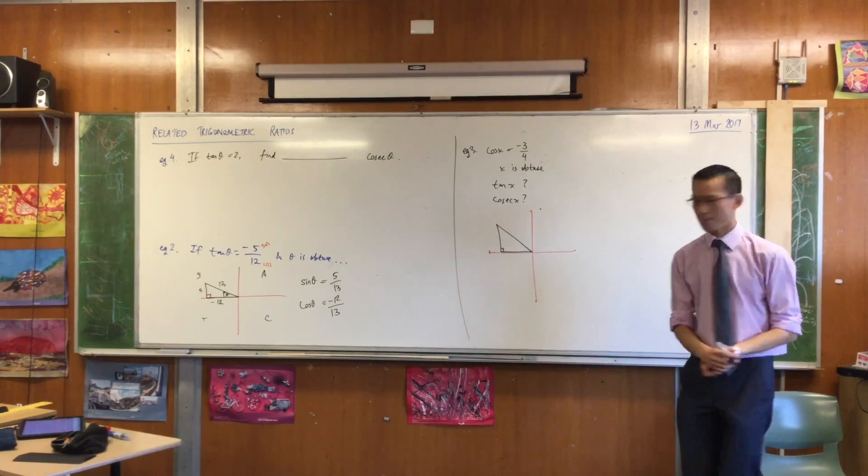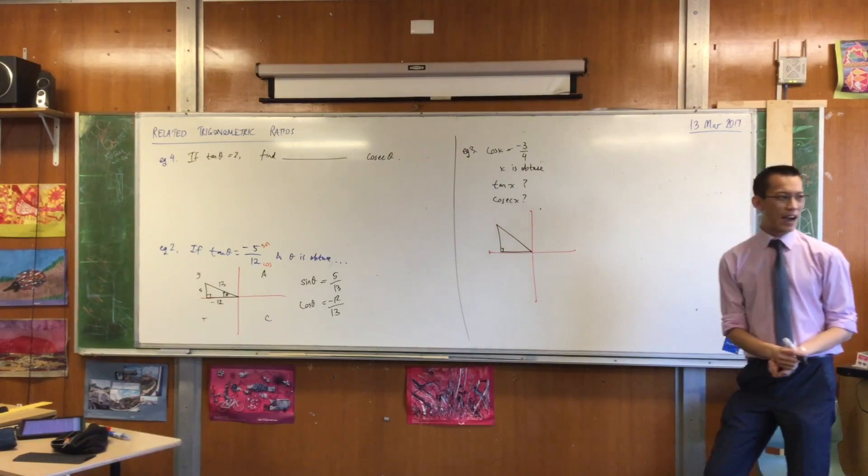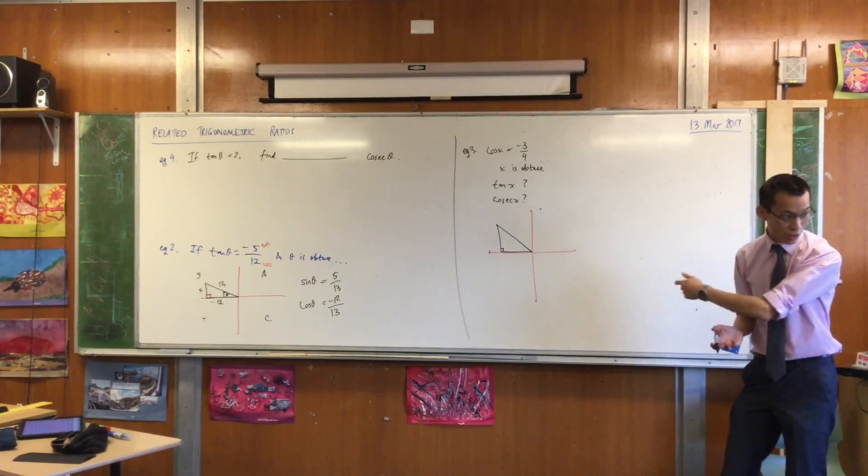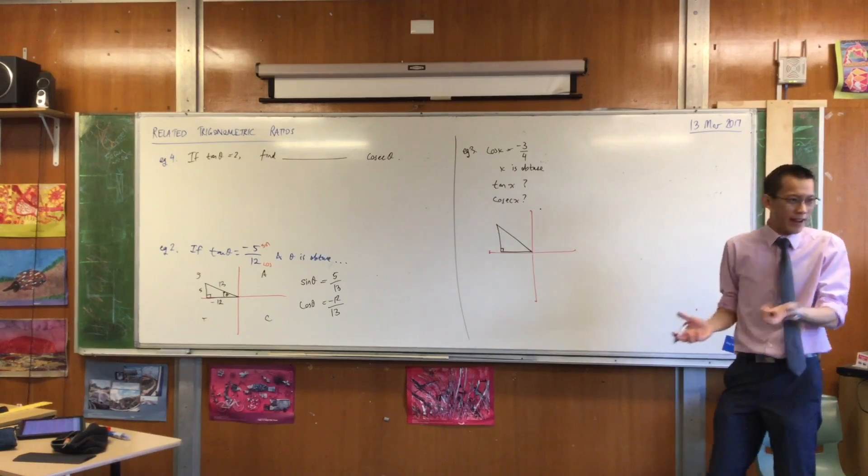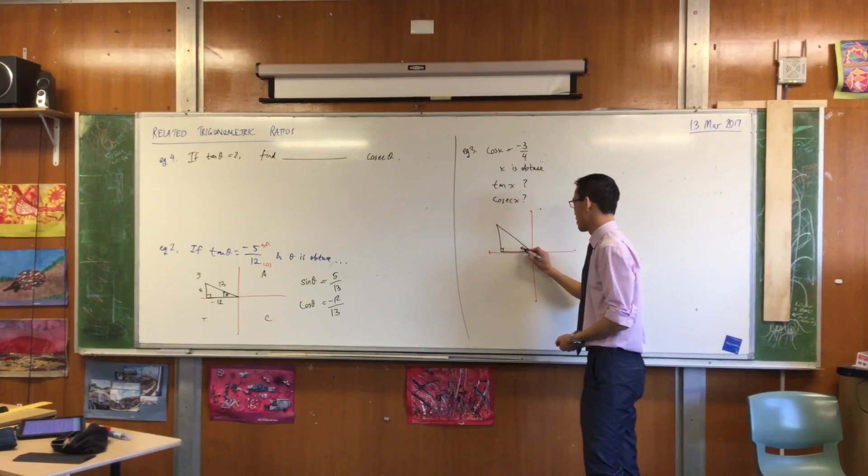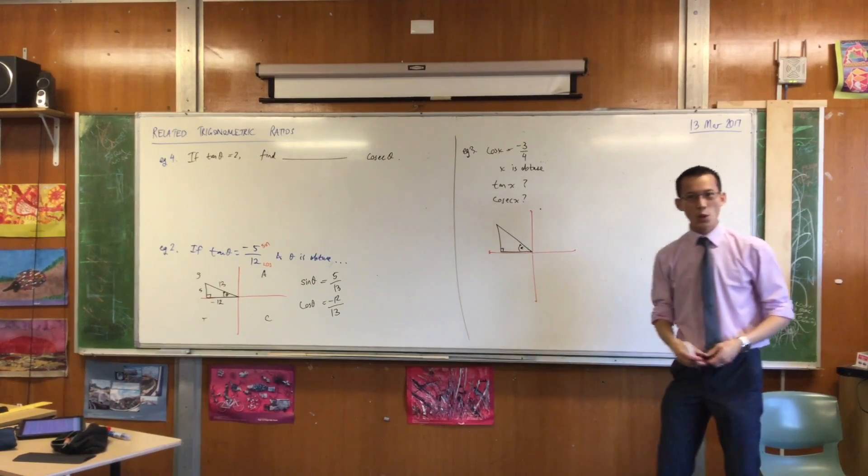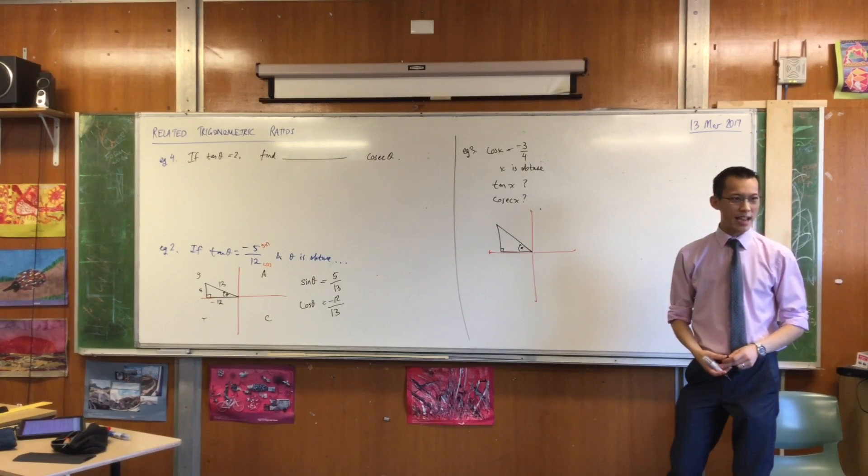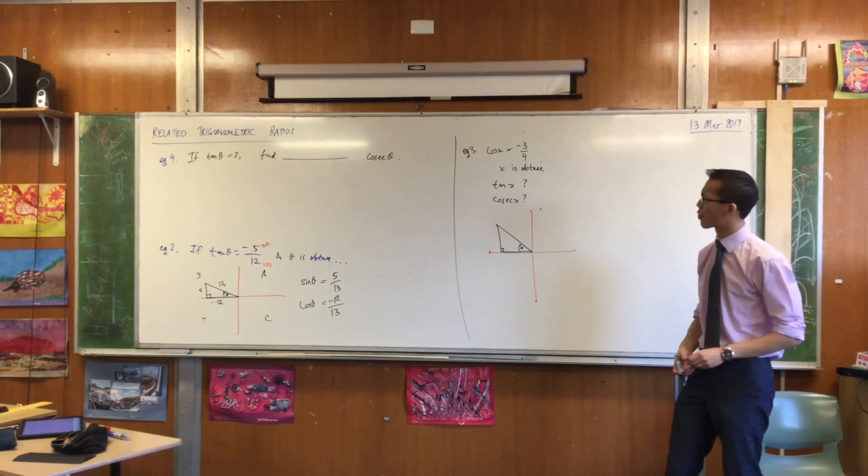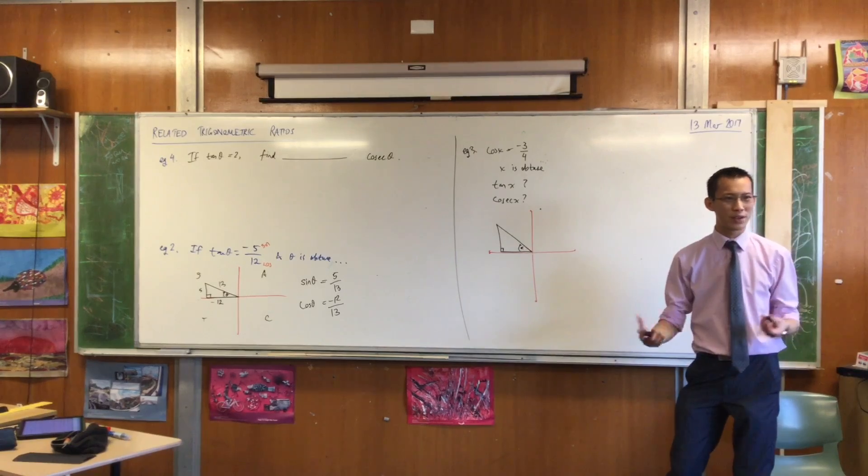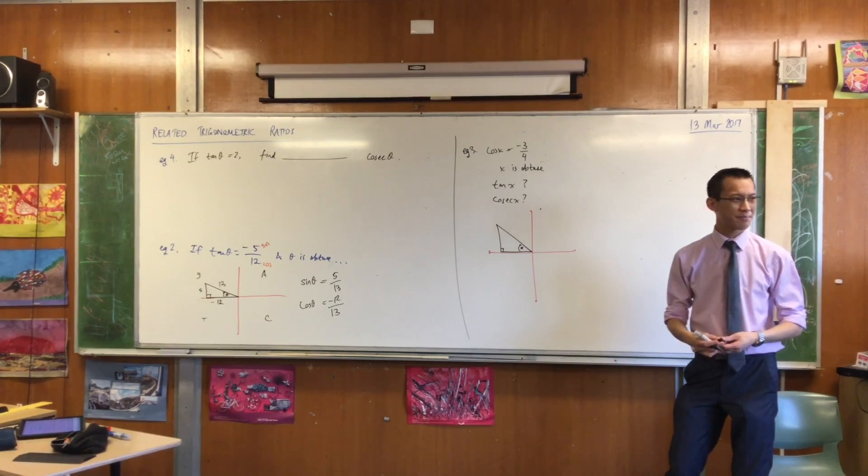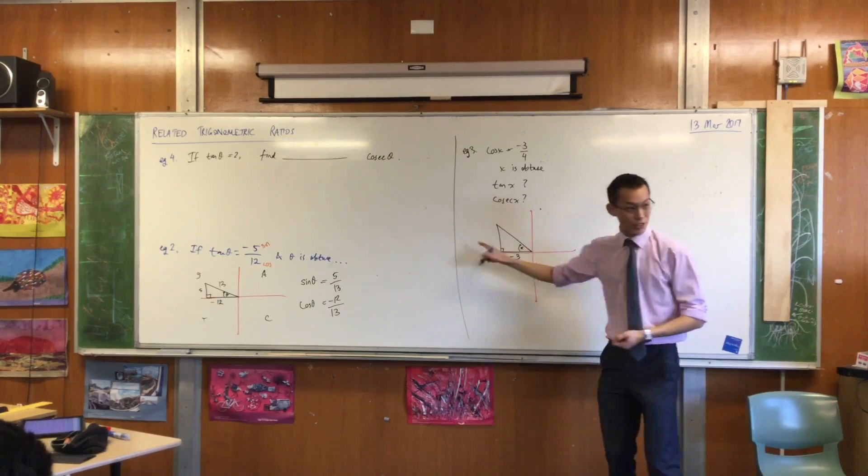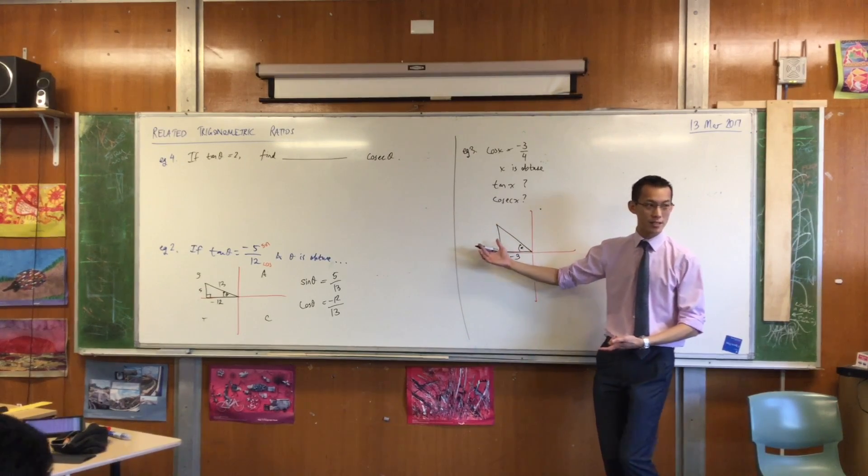I would probably say you could either describe it as the angle of the triangle at the origin, or just the bottom right here. So I'm going to put x in there. So if that's where x is, where are the minus 3 and the 4, or the 3 and the minus 4, depending on which one it is? Minus 3 is this guy. He's heading to the left, that's why he's negative. And 4 is the hypotenuse.